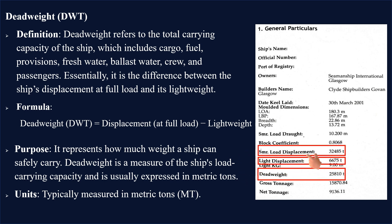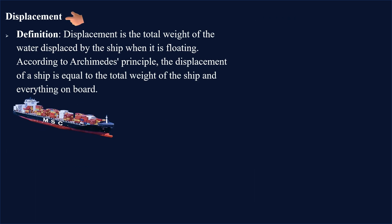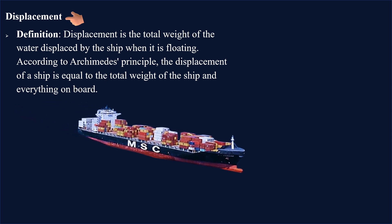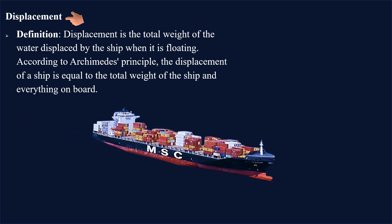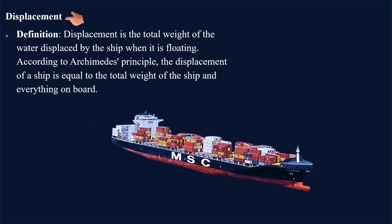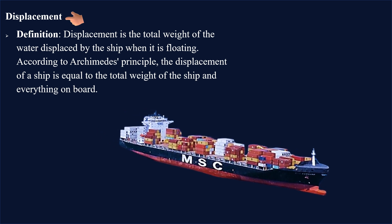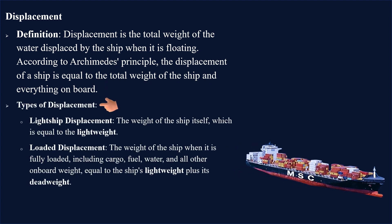After discussing the ship's displacement, let's have some exercises about dead weight calculations. Displacement is the total weight of the water displaced by the ship when it is floating. According to Archimedes' principle, the displacement of a ship is equal to the total weight of the ship and everything on board. We have two types of displacement: light ship displacement and loaded displacement.